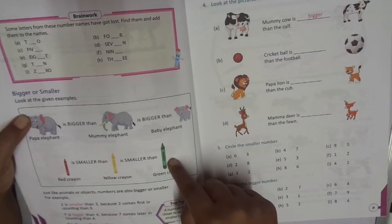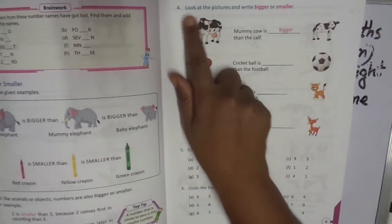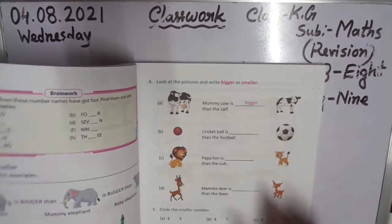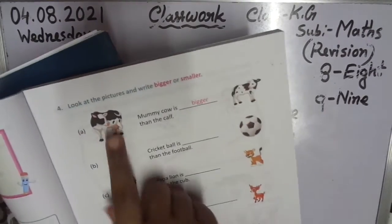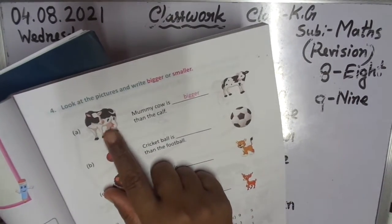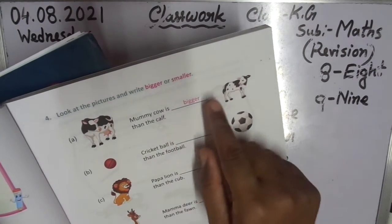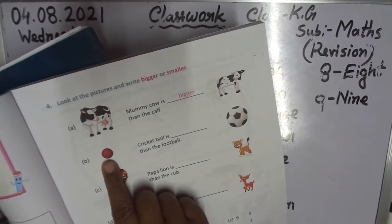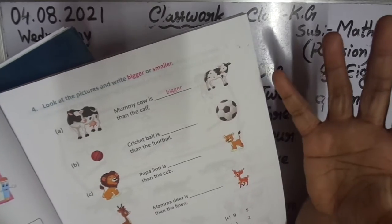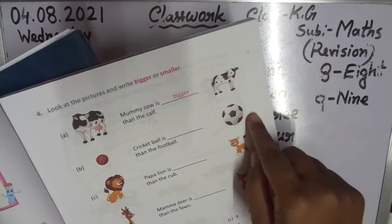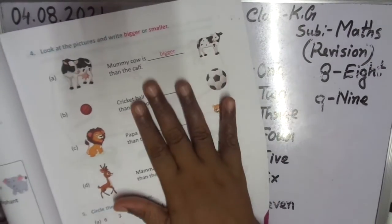Big, bigger, green. So practice page 9 — look at the picture and write bigger or smaller. See the picture: who is bigger, left side or right side? So it's mummy cow — mummy cow is bigger than the calf. Two cricket balls and football are here — cricket ball is small and football is big, so cricket ball is smaller than the football. Practice number 4 also.